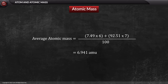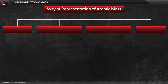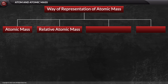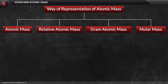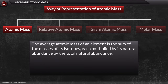The atomic mass mentioned above can be represented in different ways. The numerical value in all these cases will be the same, but the units and definitions differ. The first is average atomic mass: the sum of the masses of an element's isotopes each multiplied by its natural abundance, divided by total natural abundance. Its unit is amu or dalton.